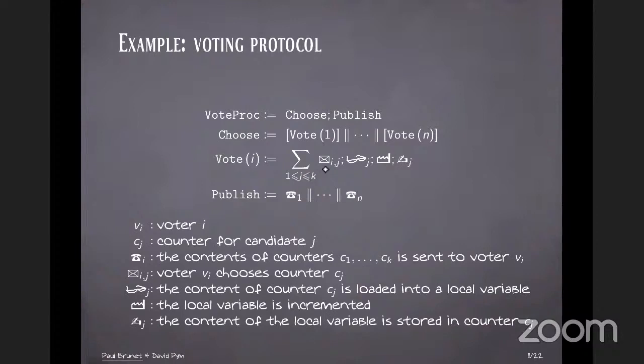Inside that box, what they do is there's a non-deterministic choice for each voter to choose a particular candidate. And when they choose that candidate, they load the content of the counter of that candidate, increment it, and then write the result. And then for the publish phase, in parallel, each voter is sent the result.